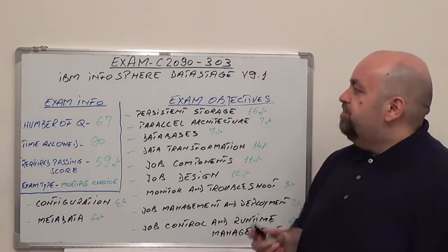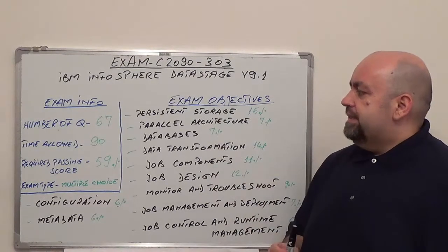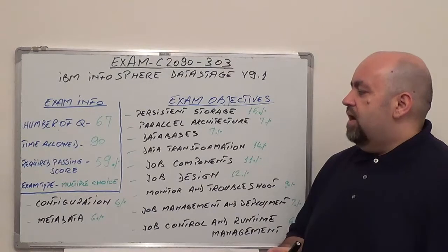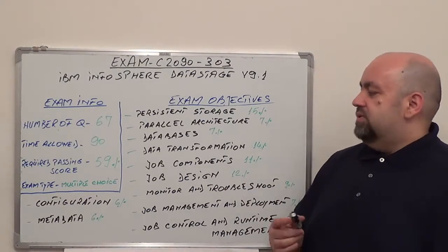I'm going to present you this exam. First, you're going to have 67 questions. The time allowed is going to be 90 minutes, and the required passing score is 59% minimum. Also, the exam type is multiple choice.